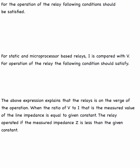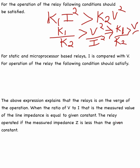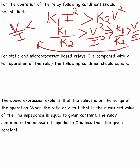For operation of the relay, the following condition must be satisfied: k1·I² > k2·V². This gives k1/k2 > V²/I², which simplifies to V/I < k, and therefore Z < k. This is the operating condition for the impedance relay.